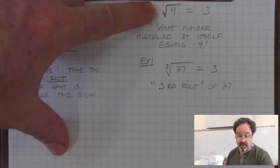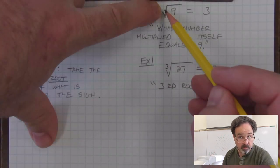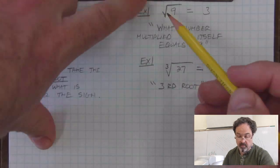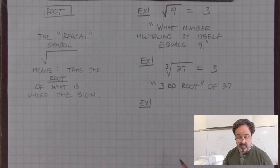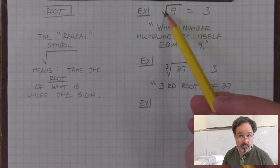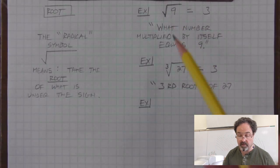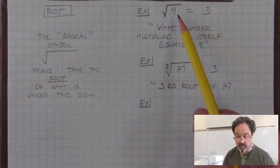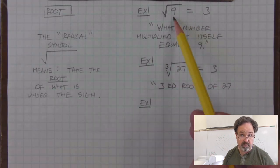Notice that in this first example, we don't have a little number here to tell us what kind of root we're looking for. When we don't have a number, it implies that it's a square root, as if there was a 2 here. We're trying to find the number that when multiplied by itself, or squared, equals 9.